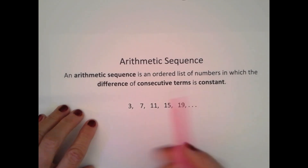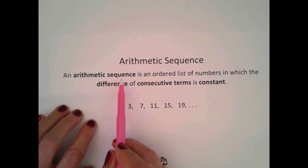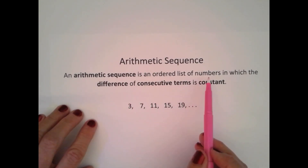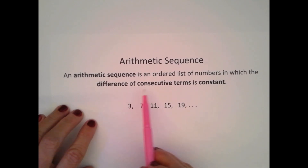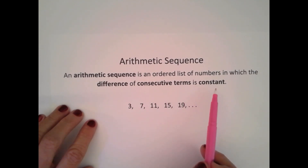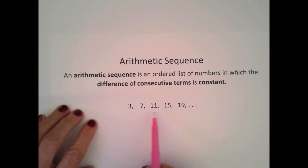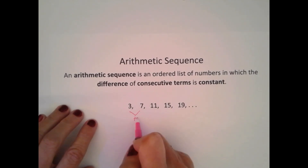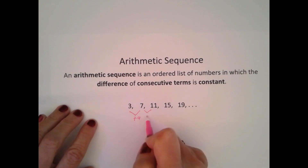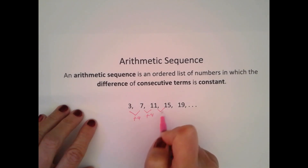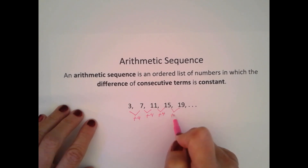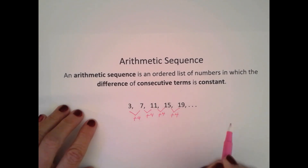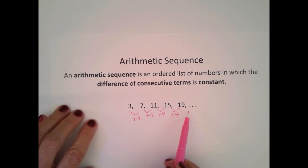Arithmetic sequences. An arithmetic sequence is an ordered list of numbers in which the difference of consecutive terms is constant. Here I have an ordered list of numbers, and I can see that from the first term to the second, there's a difference of 4. Am I adding 4 each time? 11 plus 4 is 15, and 15 plus 4 is 19. Since there is a common difference, this sequence is arithmetic.